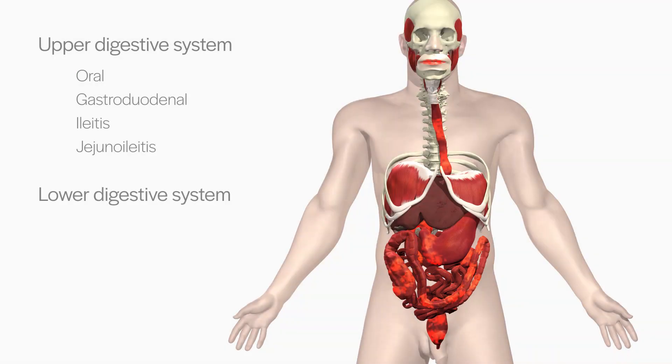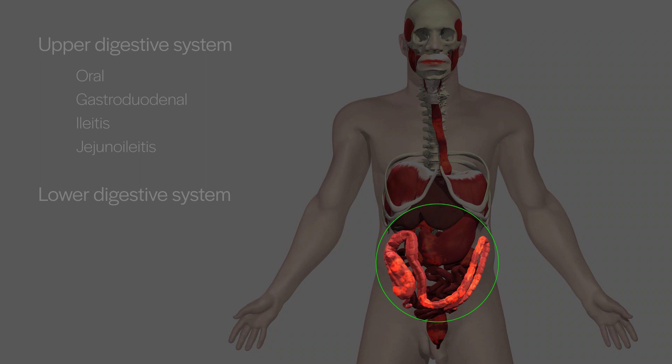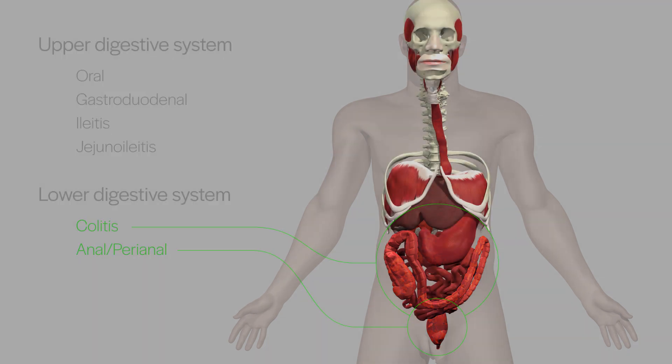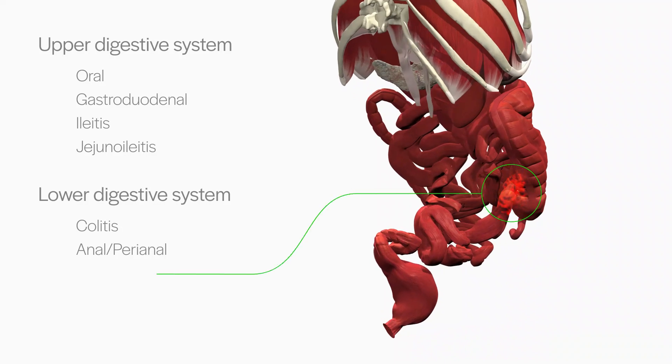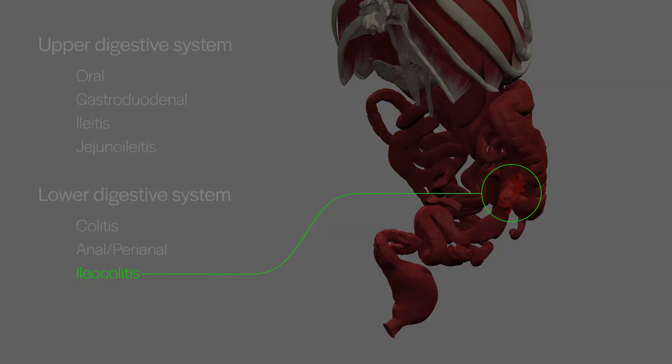The lower digestive system includes the large intestine, which is known as colitis, and the rectum and anus, known as anal or perianal Crohn's disease. The most common form, ileocolitis, occurs at the junction between the small and large intestine.